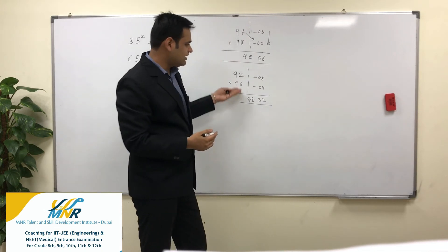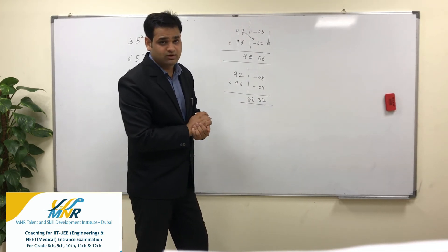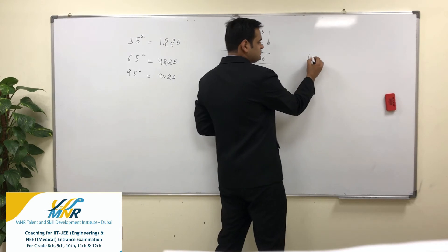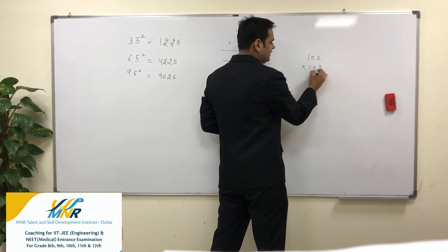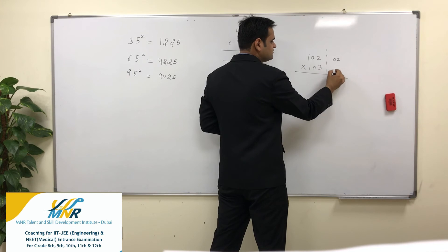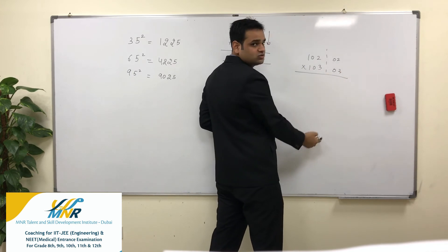I hope you are finding this very easy. We are not taking even 2-3 seconds to solve this particular calculation. Let's say it's 102 into 103. Here difference will be 02, here difference will be 03. 2 into 3 is 6.